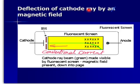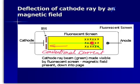Deflection of cathode ray, or electron beam, by a magnetic field. There is a magnetic field here — the crosses indicate magnetic field lines going into the page. Since the electron beam is going to the right, you have to assume that the conventional current is going to the left. To determine the direction of the magnetic force on the electron beam, you use Fleming's left-hand rule, and you find that the magnetic force is downward — that's why the electron beam gets deflected downwards.